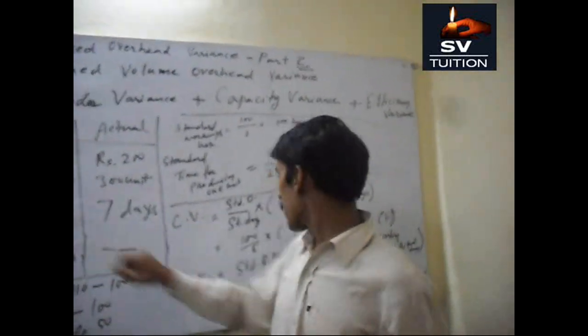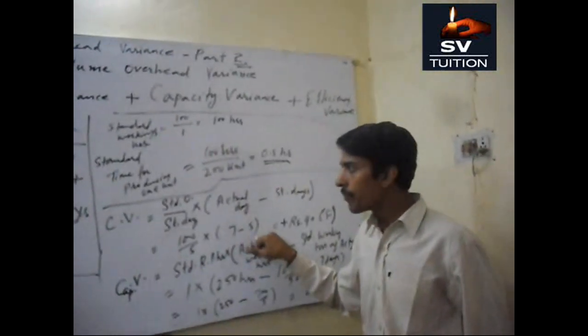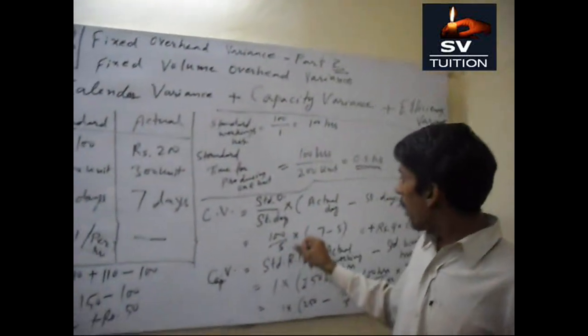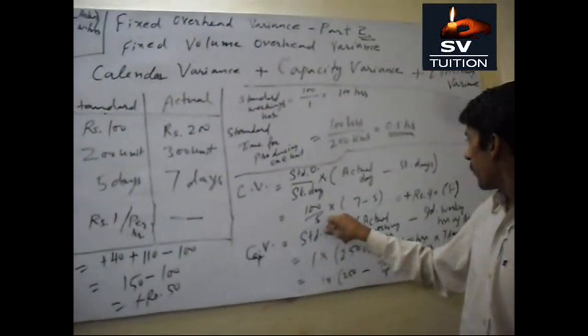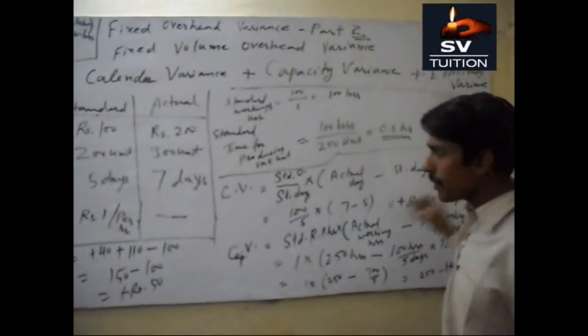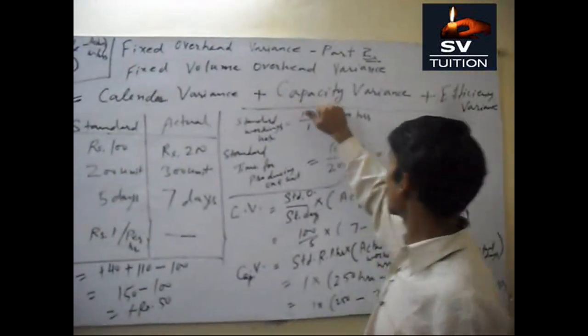Actual days and standard days are given 7 minus 5 and standard overhead is 100 divided by standard days is 5 and after calculating this, this is 40 and this is favorable.